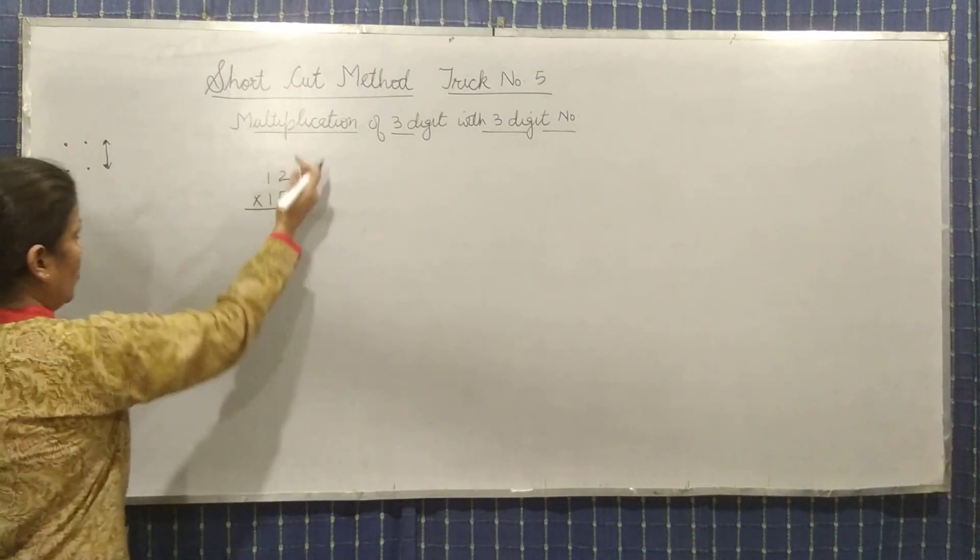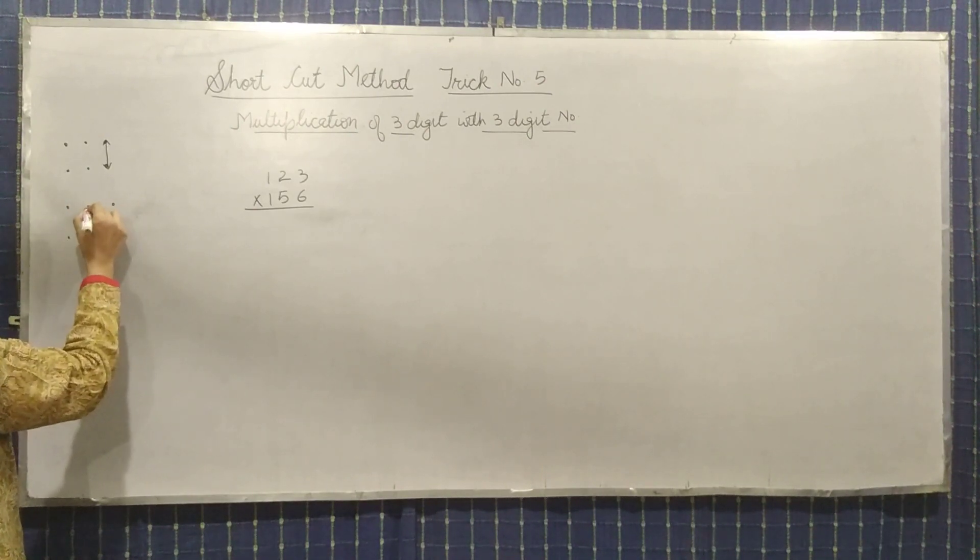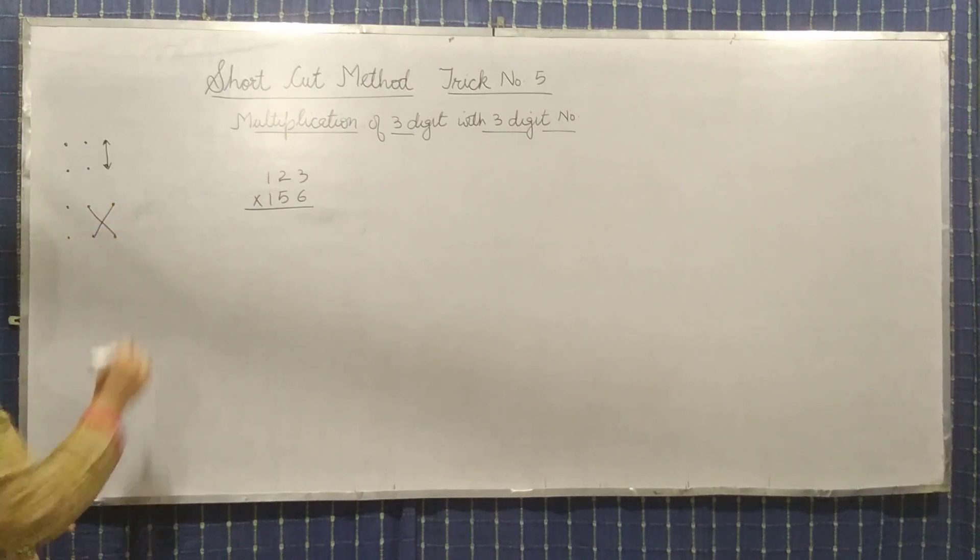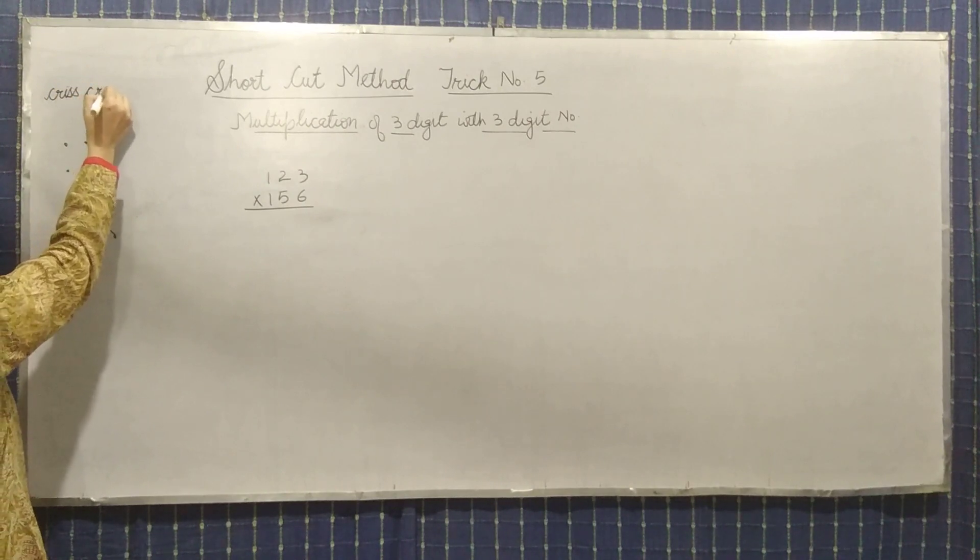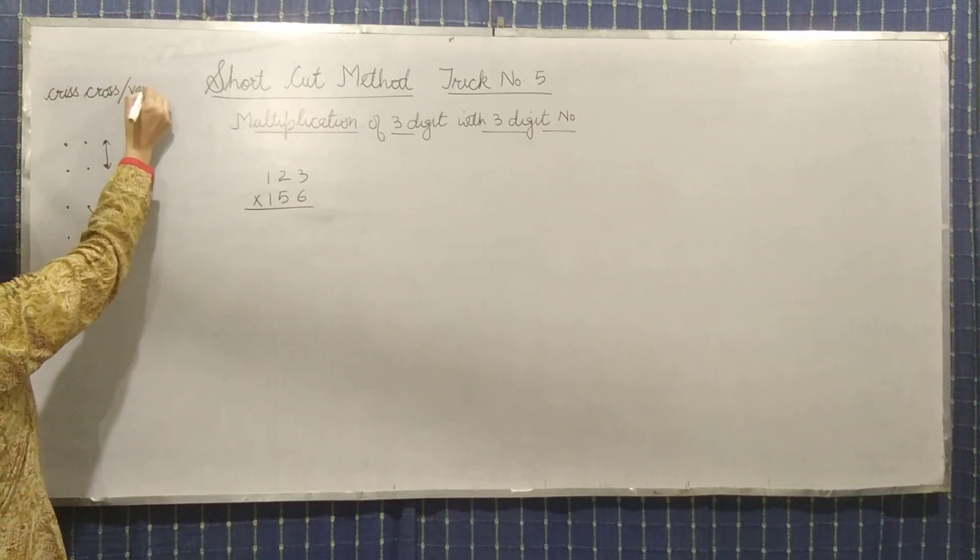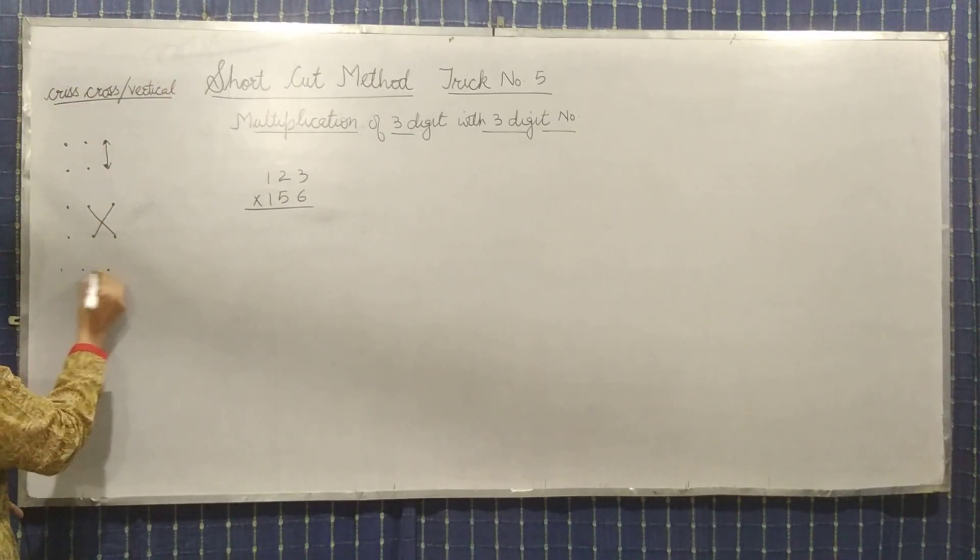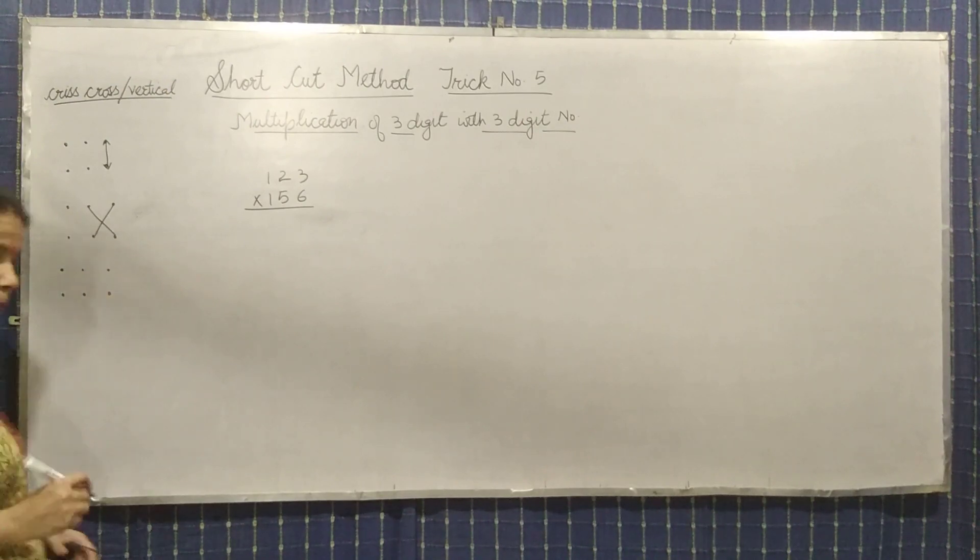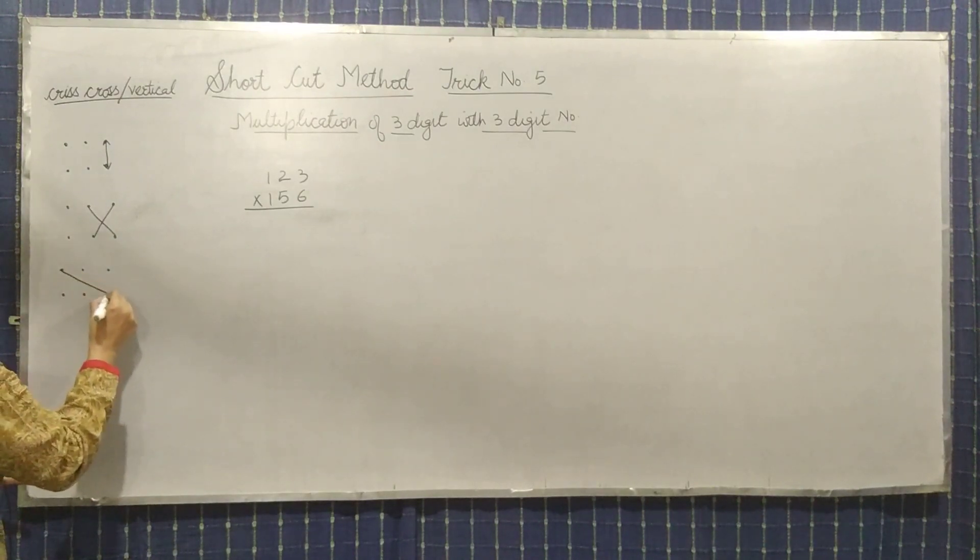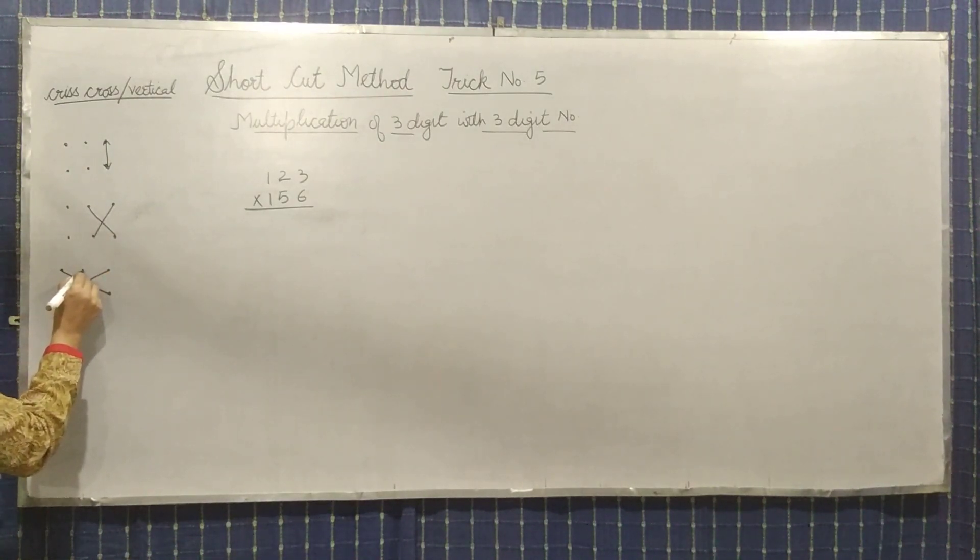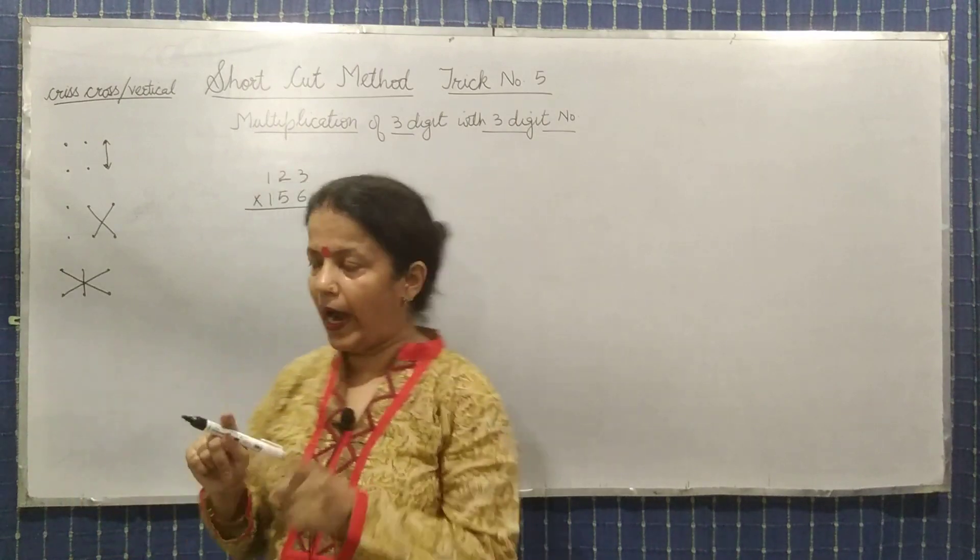First, you will multiply vertically. In the second step, you will cross multiply - crisscross and vertical. You have to keep this in mind: crisscross, vertical.